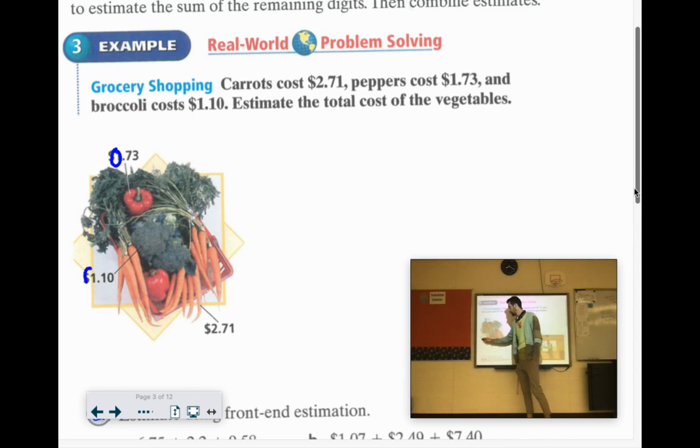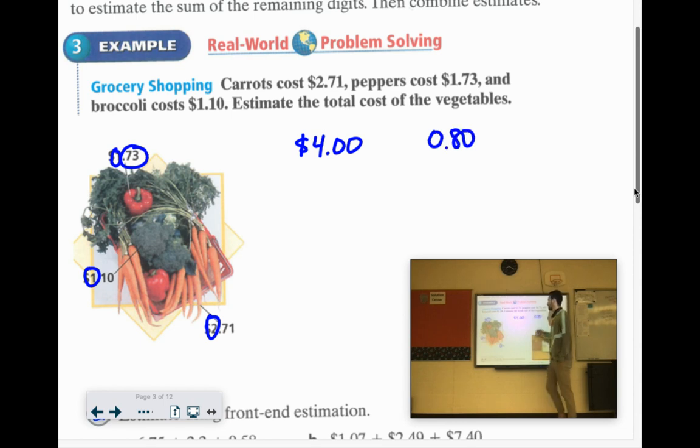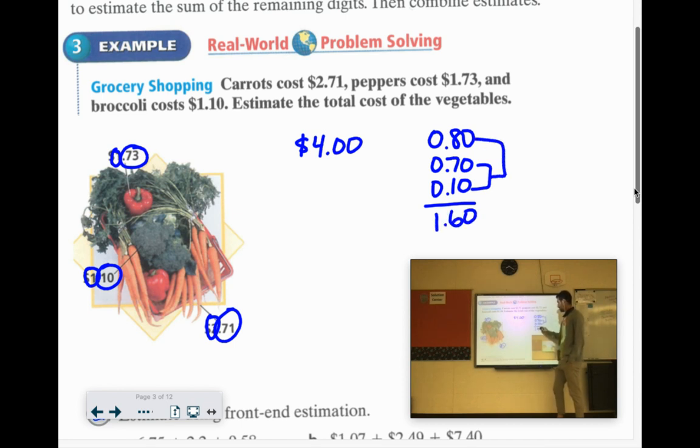So if we do the front end stuff, 1 plus 1 plus 2 would be $4. And then if we're doing estimates, 73 cents, let's call it like $0.80. 71 cents. We'll call that $0.70. And then $0.10. Let's call it $0.10. So if we add these up, $0.70 plus $0.10 would be $0.80. Plus another $0.80 would be $1.60.